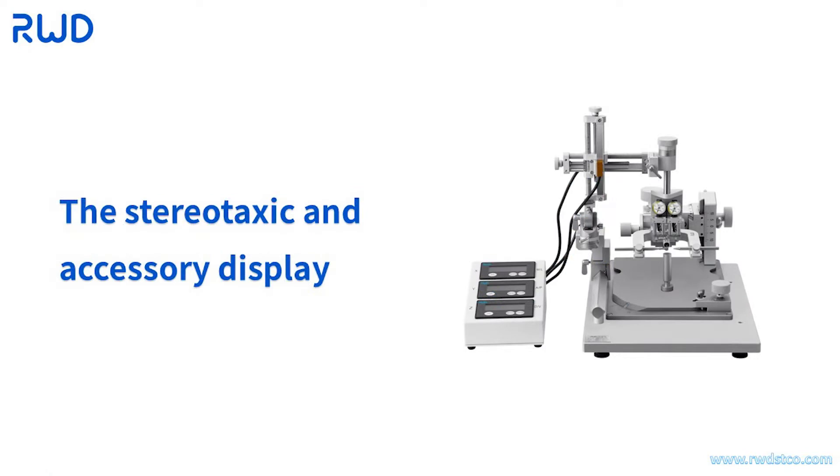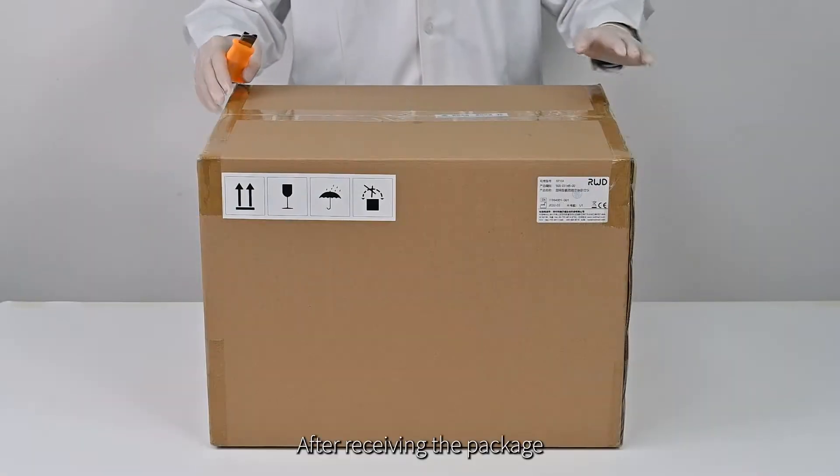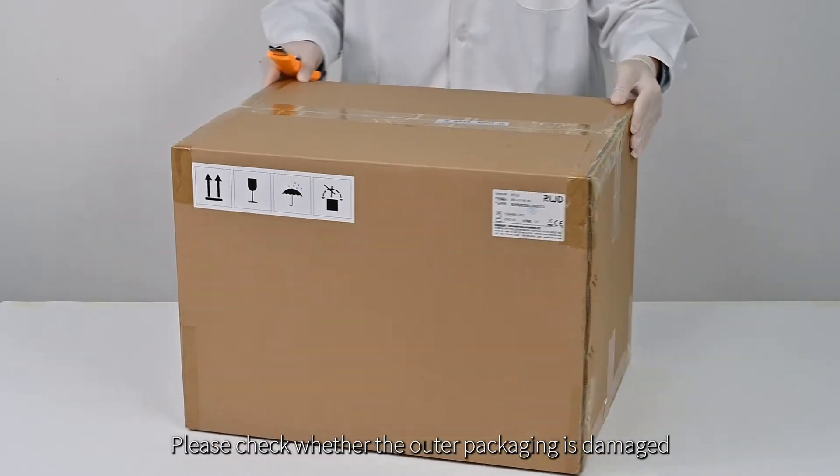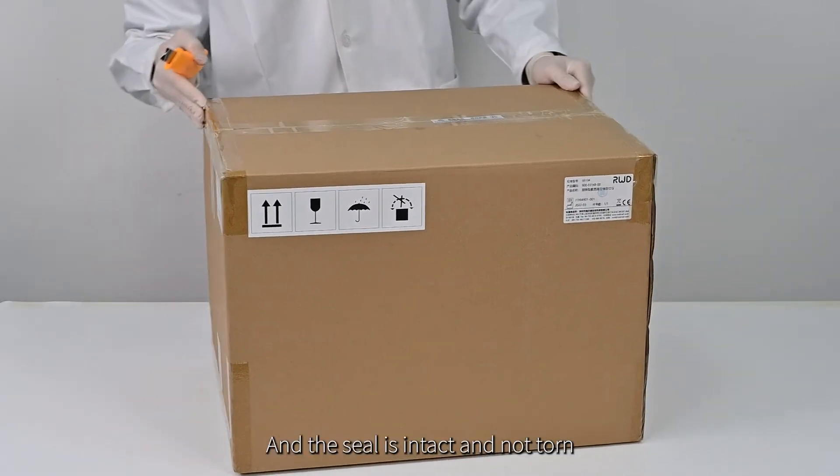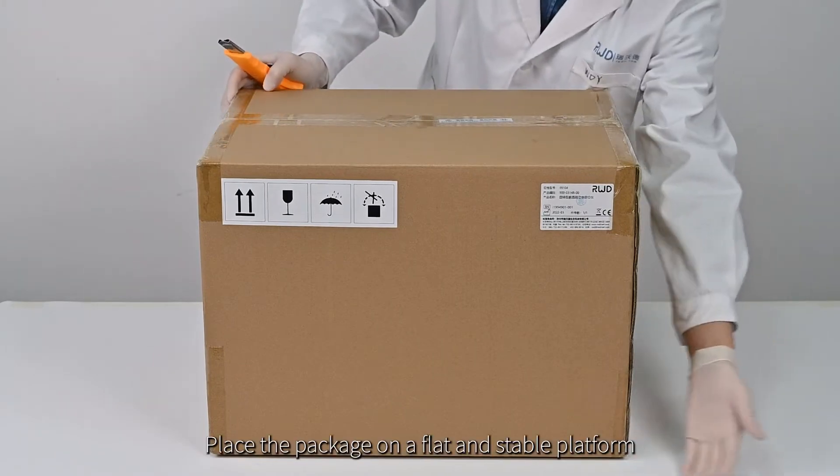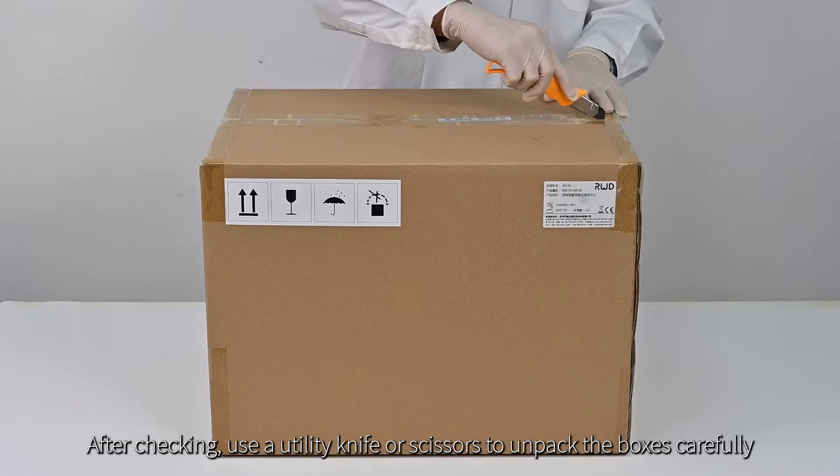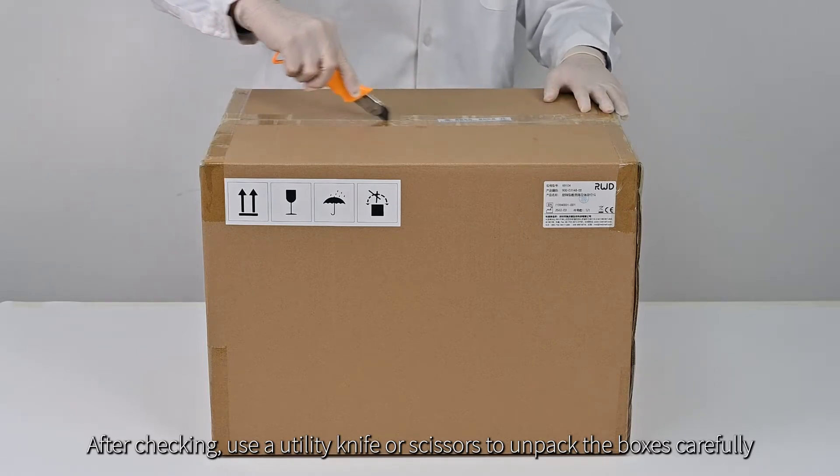First, the Stereotaxic and Accessory Display. After receiving the package, please check whether the outer packaging is damaged, and the seal is intact and not torn. Place the package on a flat and stable platform. After checking, use a utility knife or scissors to unpack the boxes carefully.